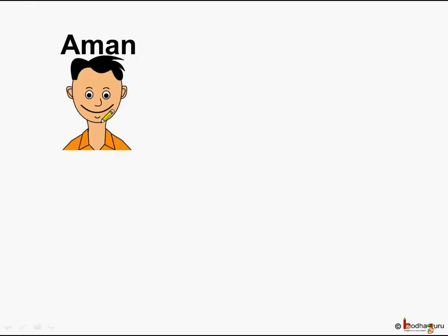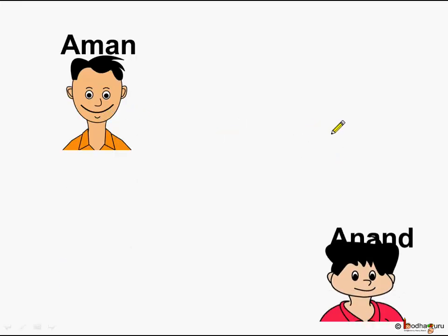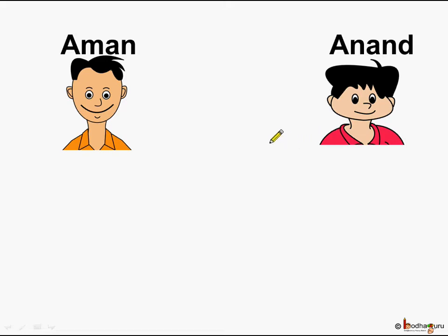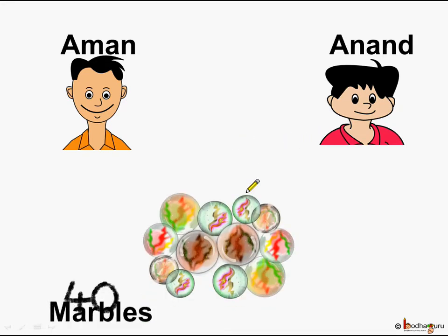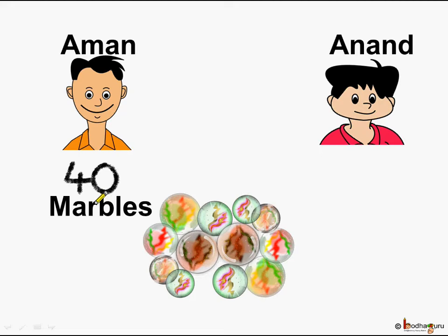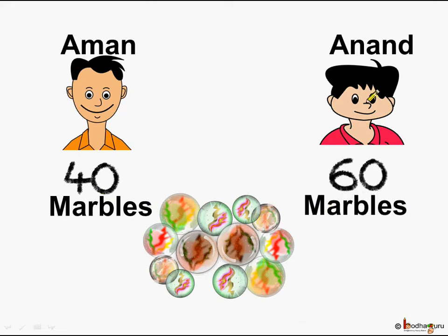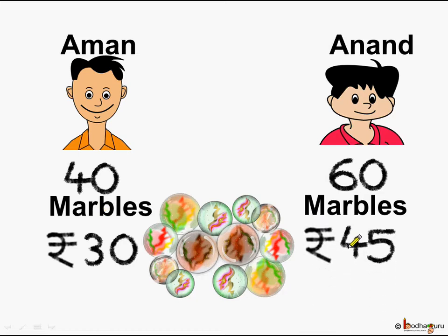This is Aman and this is Anand. They both bought marbles for playing. Aman bought 40 marbles and Anand bought 60 marbles. Aman paid rupees 30 to buy the 40 marbles and Anand paid 45 rupees to buy 60 marbles.